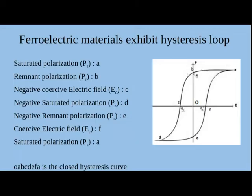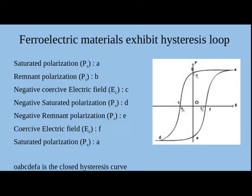Looking at this graph, the curve is represented between P and E — polarization on y-axis and electric field on x-axis. Starting at origin O, where both electric field and polarization are 0, as we increase the electric field, polarization also increases up to a certain limit. Thereafter, though we keep increasing the electric field, polarization does not change — it remains saturated. That particular point is called the saturated polarization value, represented by point A.